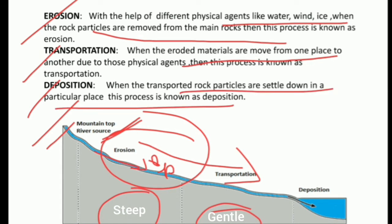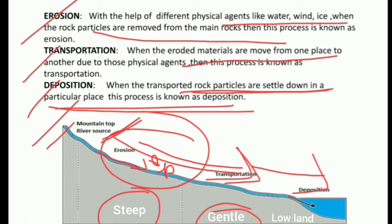The last physical process is deposition. When the transported rock particles are settled down in a particular place, this is simply known as deposition. From the steep slope to the gentle slope, and after the gentle slope we have the low land or plain surface, where the river starts settling down all the eroded material — that process is deposition.